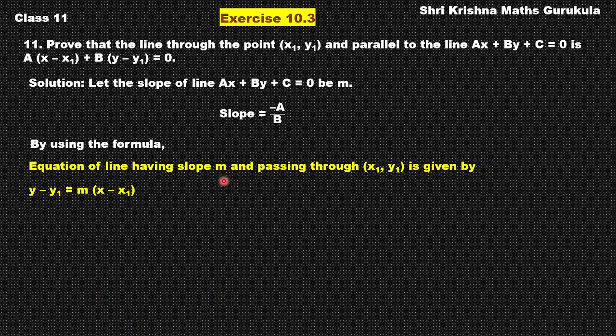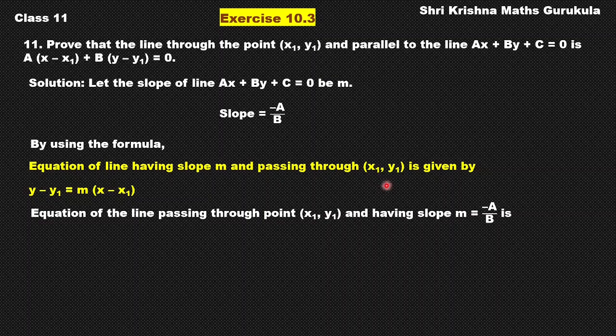So we are substituting for slope here because the point is x1, y1. In this case also, in the general form, it is x1, y1. So equation of the line passing through the point x1, y1 and having slope m equal to minus A by B is—that is, we are going to substitute in this standard form for m because x1, y1 are same points.